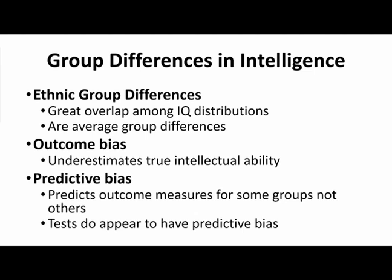We also need to consider that a lot of measures of intelligence are going to be biased. We started off this chapter by talking about how difficult it is to define intelligence, and that intelligence means different things to different cultures and groups. How do we know that a measure of intelligence in one country is equivalent to a measure in another? How can we be sure that these studies are using a measure that works across all cultures? That's the kind of critical thinking that's really important in this chapter.